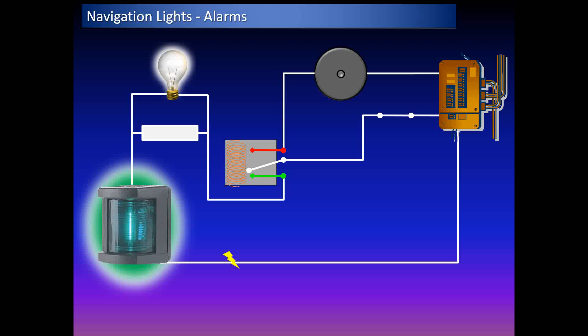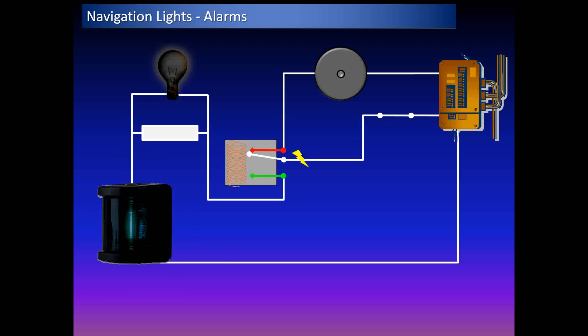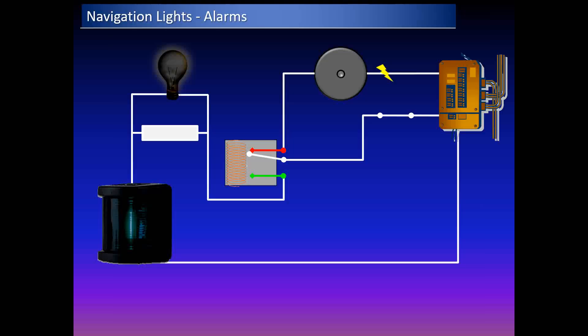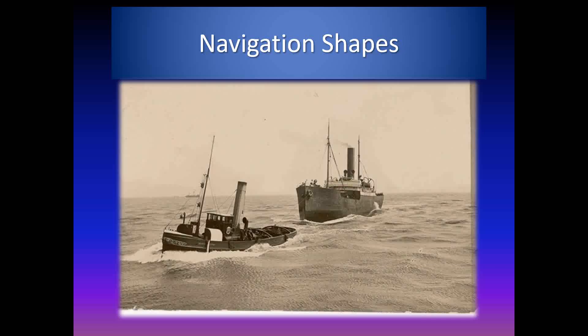Always test the navigation lights before sailing and check the indicators when you switch them on. If a navigation light fails, the recommended steps are: check the fuse, switch to an alternate circuit (as lights on certain ships are provided in duplicate), change the bulb, call an electrician or technician, test all lights on the pilot switches and verify physically that they work, then inform the master and senior officer.